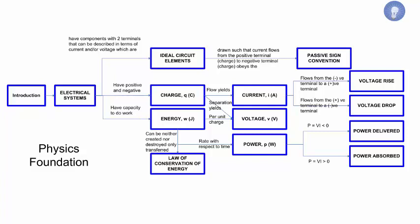Here's an example of a concept map for the physics foundation. So we obviously start with the introduction to electrical systems, which is what we're doing right now. And then we talk about some basic concepts related to electricity, including ideal circuit elements such as resistors or inductors or capacitors, charge Q or energy W, which has units of joules, and the law of conservation of energy.